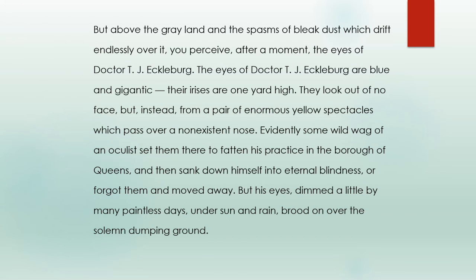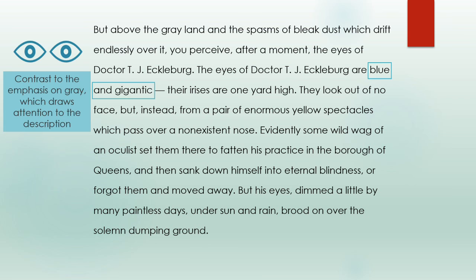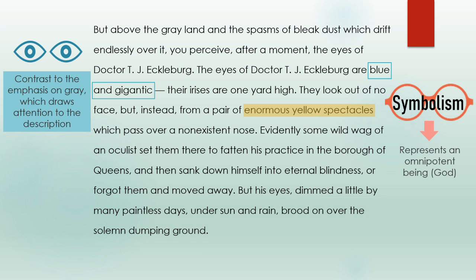This is the next part — please pause again to read it. This is where the passage starts to get interesting. We see that Dr. T.J. Eckleburg's eyes, which are displayed on a billboard, are blue, which is a contrast to the previous emphasis on gray. These eyes, along with large spectacles, are an important symbol that represent an all-seeing or omnipotent being, such as God. Just like God, these eyes are watching over this entire scene, but we can't see the rest of Dr. T.J. Eckleburg's face, just like the way that we can't really see what God looks like.